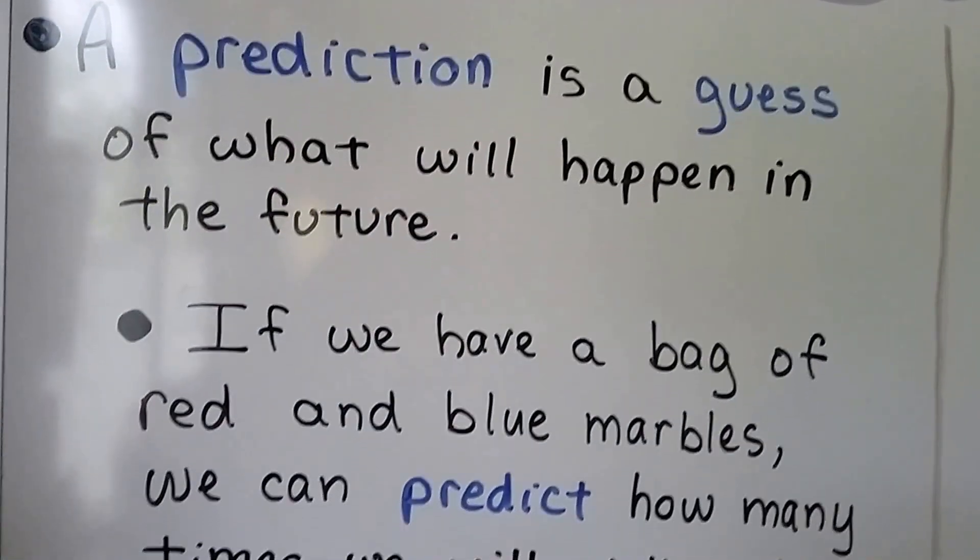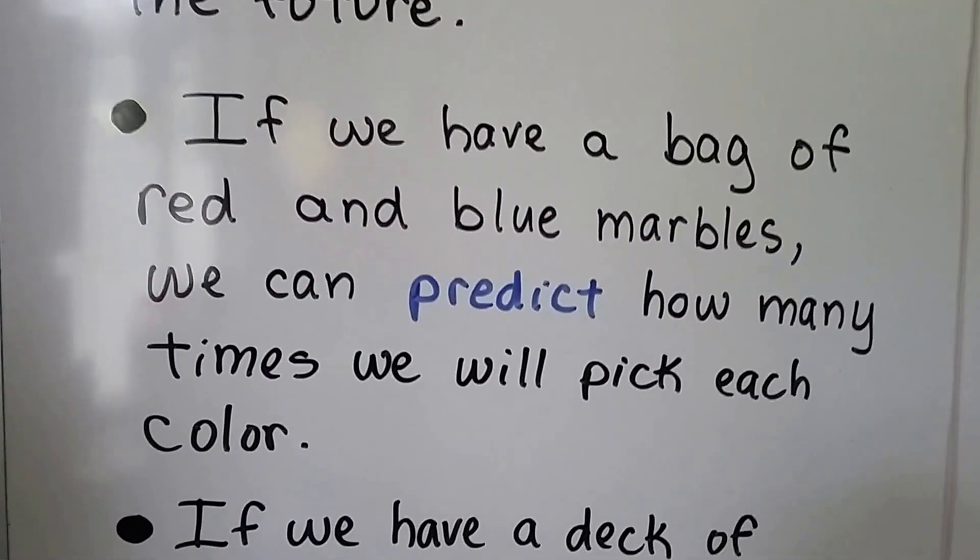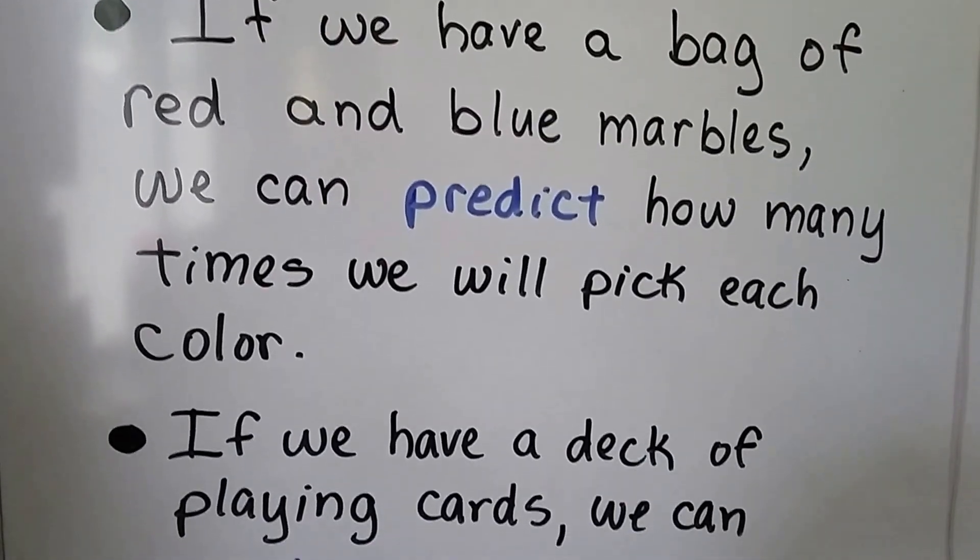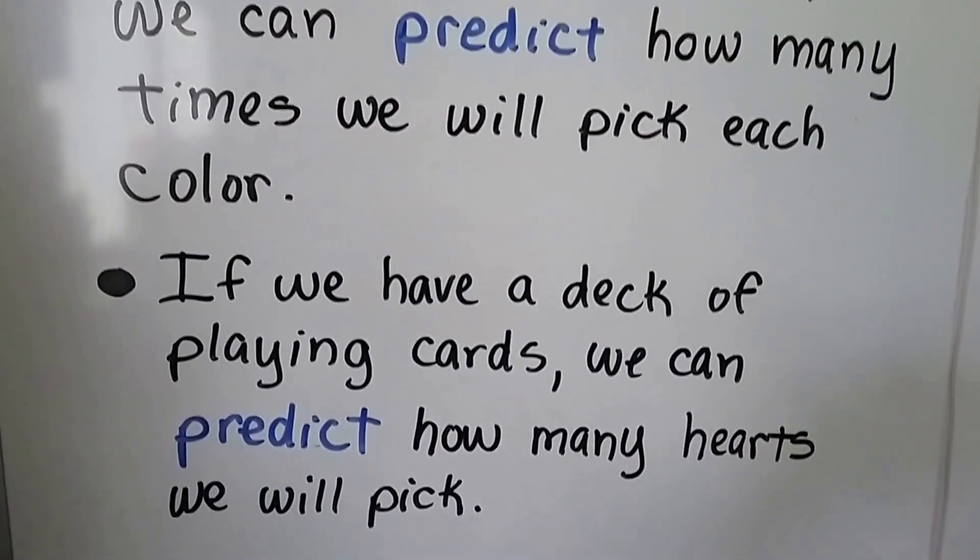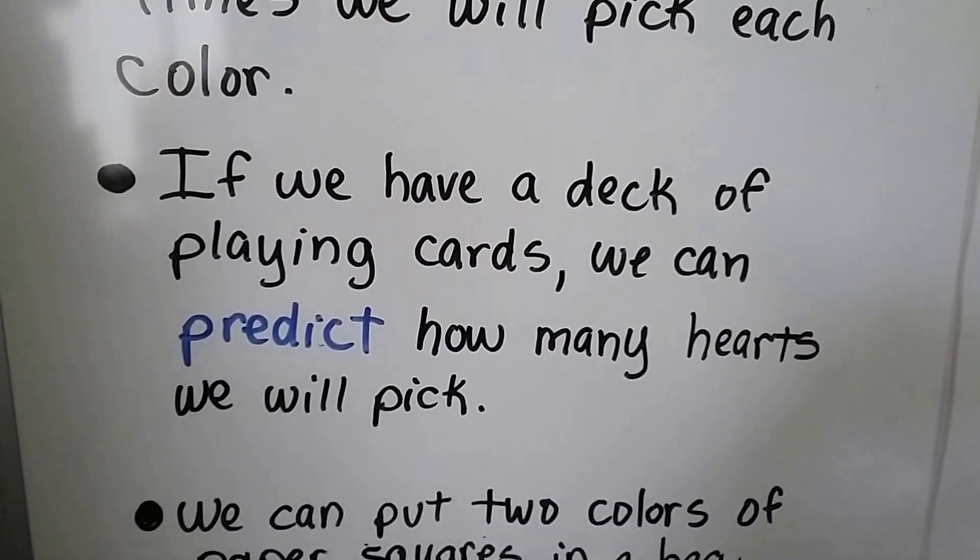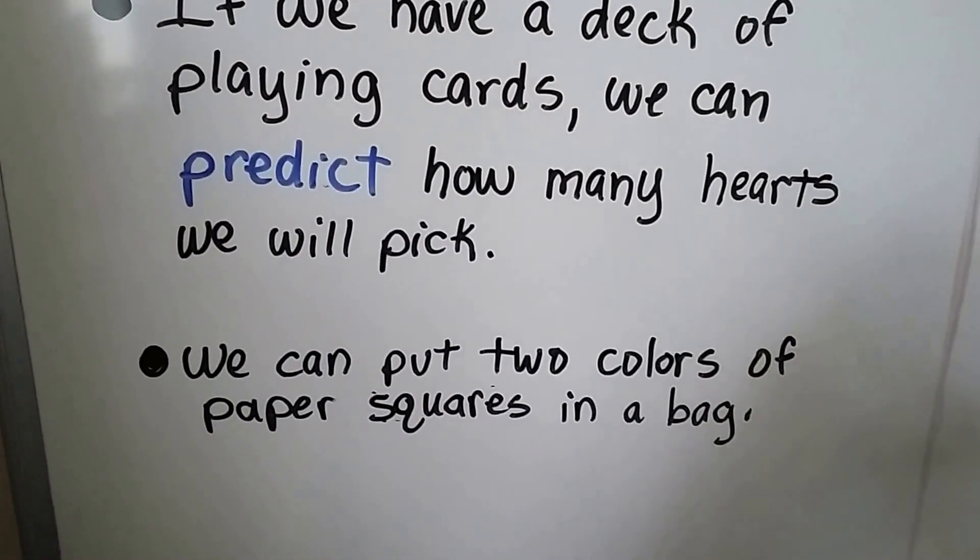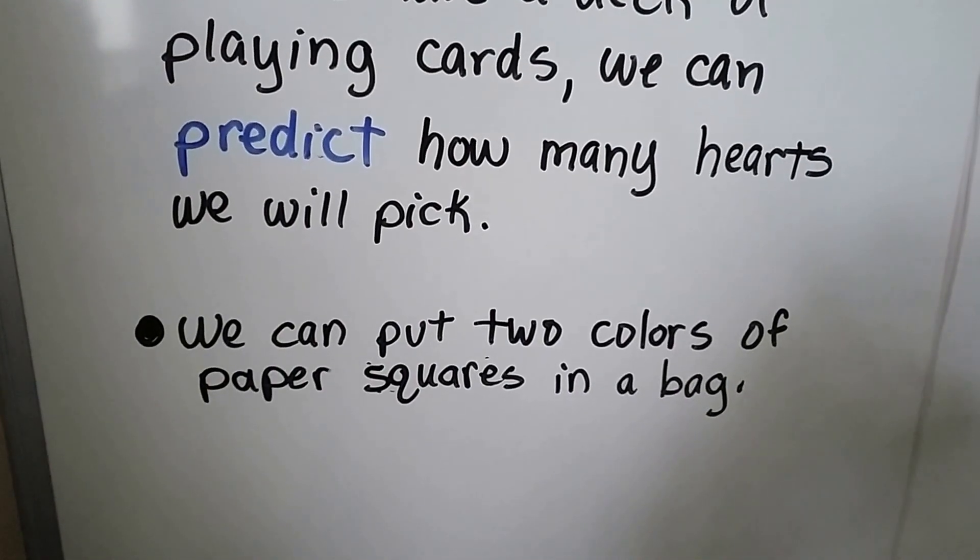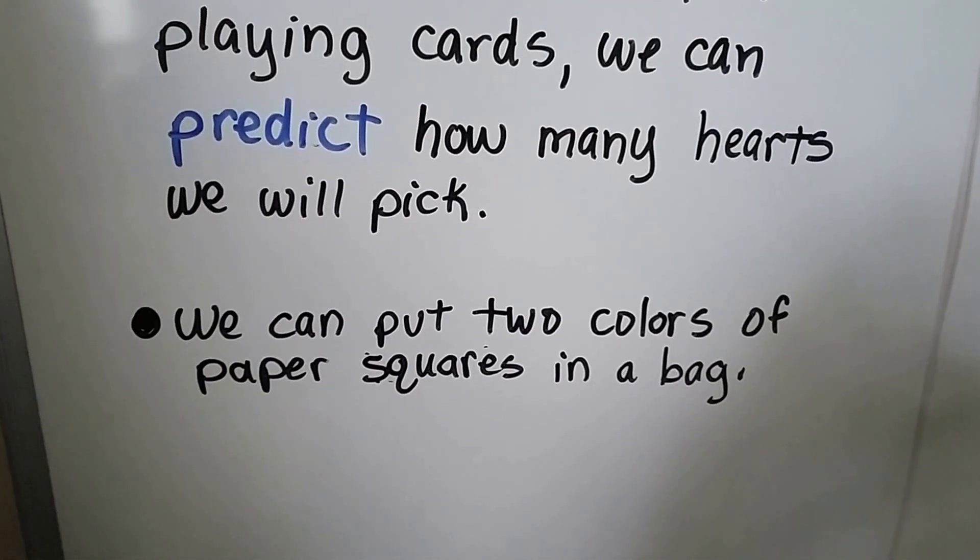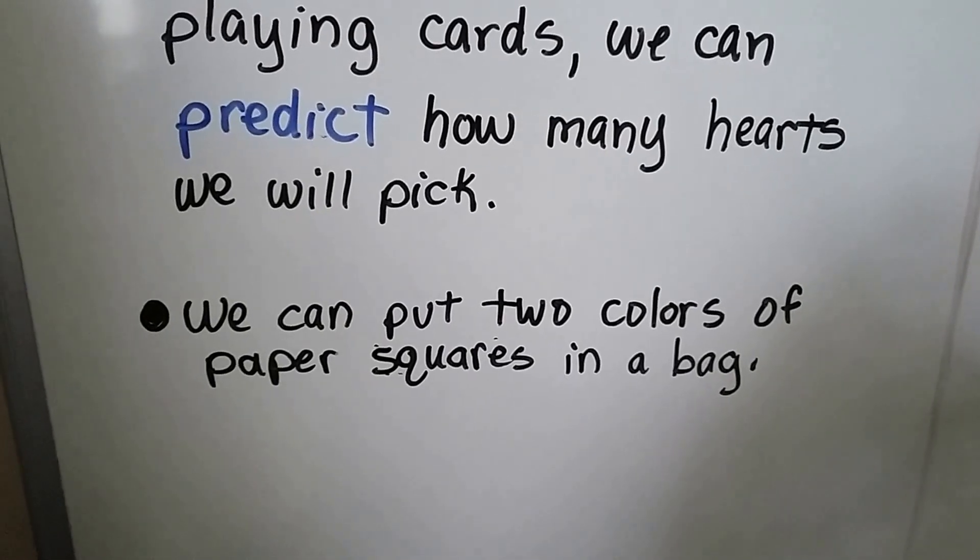If we have a bag of red and blue marbles, we can predict how many times we will pick each color. If we have a deck of playing cards, we can predict how many hearts we will pick. We can put two colors of paper squares in a bag. We can predict how many times we will pick a certain color.